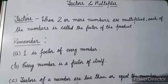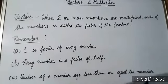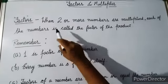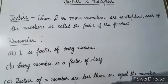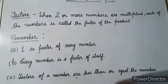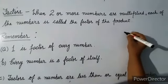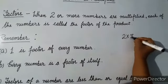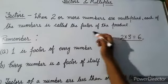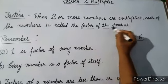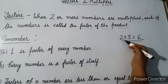Factors and multiples. In this video we will see what are factors. The definition: when two or more numbers are multiplied, each of the numbers is called the factor of the product. For example, when we multiply two into three, two times three is six. Six is the product, so two and three are the factors of six.